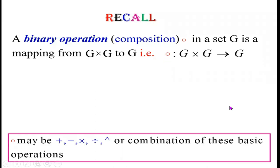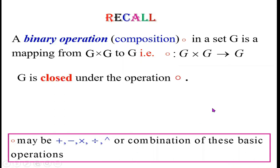The circle may be addition, subtraction, multiplication, division, or a combination of these basic operations. If the circle is a binary operation defined on a set G, then the set G is closed under the operation circle.